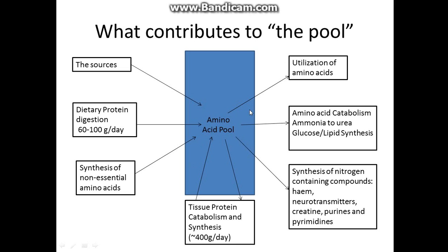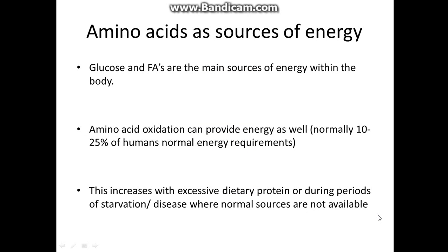So what uses it up? Protein synthesis uses a lot of the amino acid pool, but also catabolism — breaking down for energy — the conversion of ammonia to urea, and synthesis of glucose and lipids. Also the synthesis of nitrogen-containing compounds including heme, neurotransmitters, creatine, purines, and fatty acids.